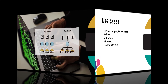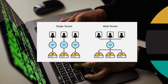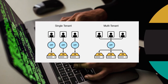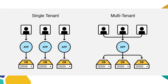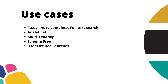Point number three is multi-tenancy. As explained in the previous lecture, Elasticsearch has multi-tenancy capability. Suppose you have multiple customers or users, each with a separate collection of documents, and a user should never be able to see documents that don't belong to them. This means every user should have their own index, making it a multi-tenancy architecture.